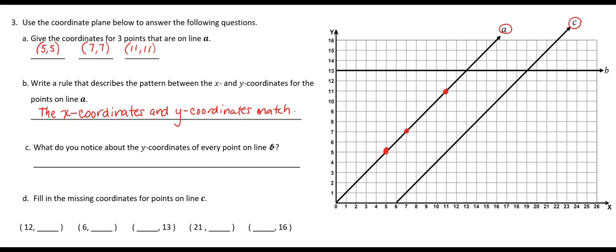Question C says, what do you notice about the y coordinates of every point on line B? Well, line B, I didn't point out before, this is line B, so that's a horizontal line.